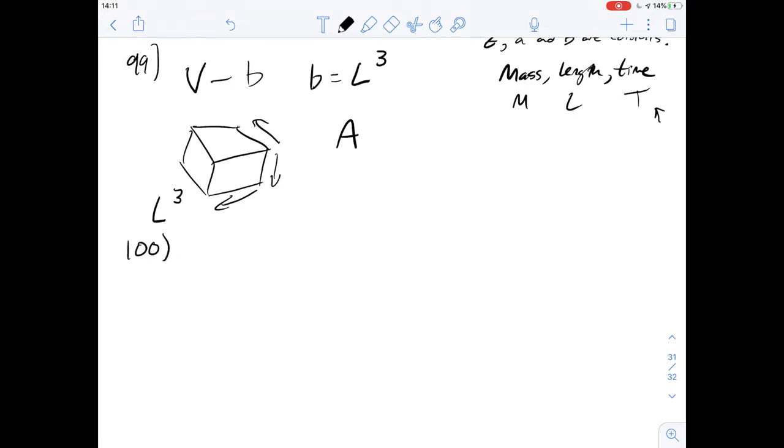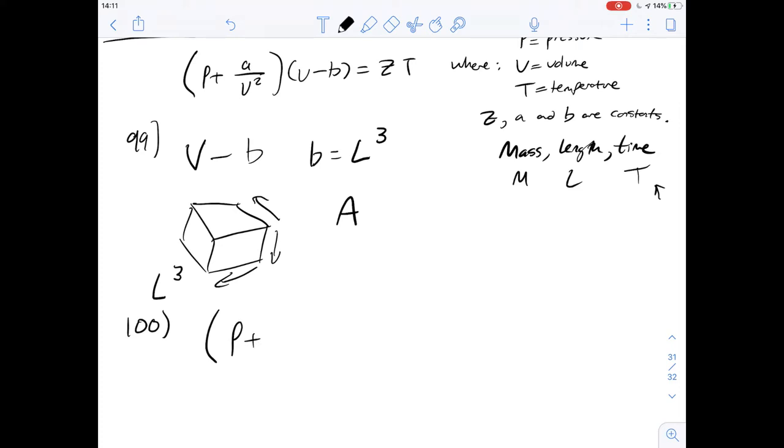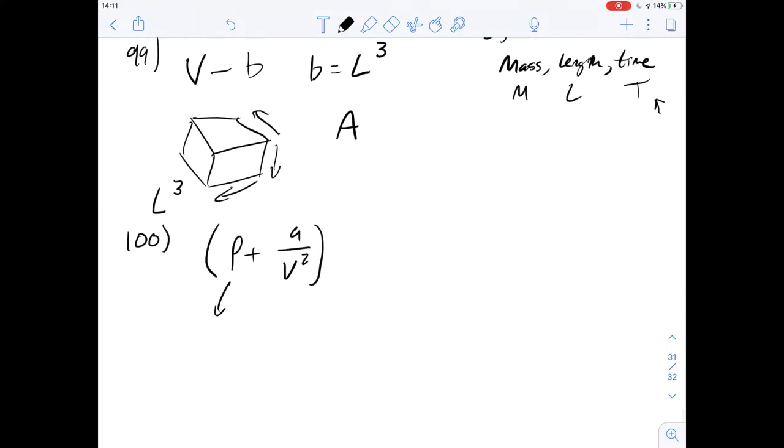Okay, so for question 100, and this is where it starts to get quite tricky, it asks what the dimensions of A are. So again, with the same logic, we have a part of the equation that says P plus A over V squared. Now P is for pressure, which implies that this half of the expression also is for pressure. So A over V squared is pressure.